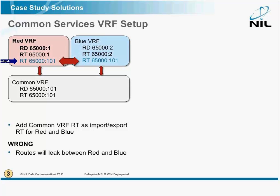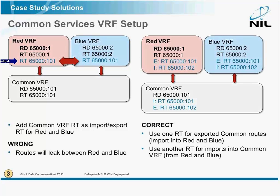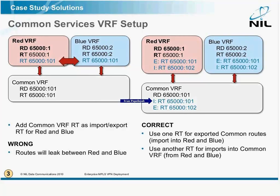So this will not work. The right solution: you keep the route distinguishers and route targets as before, and then you use an asymmetric trick. Export from red and blue is import in common, and export from common is import in red and blue. So you see, we don't use the same export and import route targets.